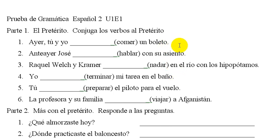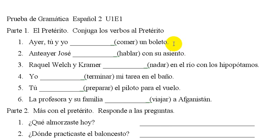To be more specific, we're going to look at using regular AR, ER, IR verbs, as well as what are known as car, gar, zar verbs, and also the irregular verbs ser, ir, ver, dar, and hacer in the preterite. So those are the verbs we'll be looking at. There are other irregular ones that we will not be touching on today.